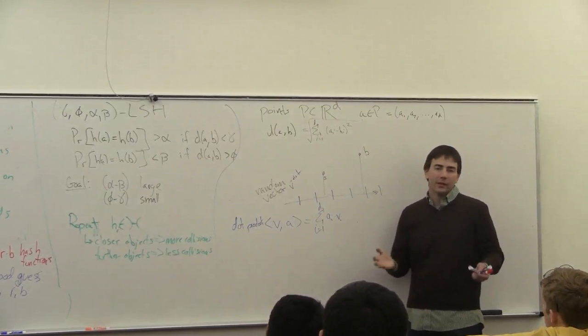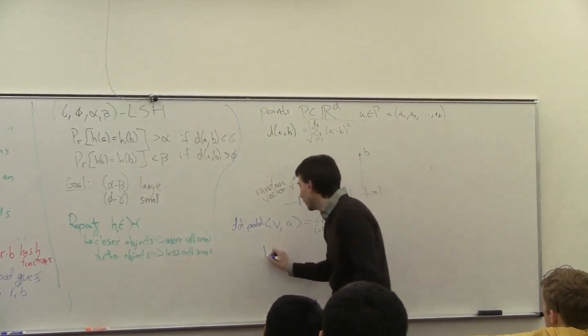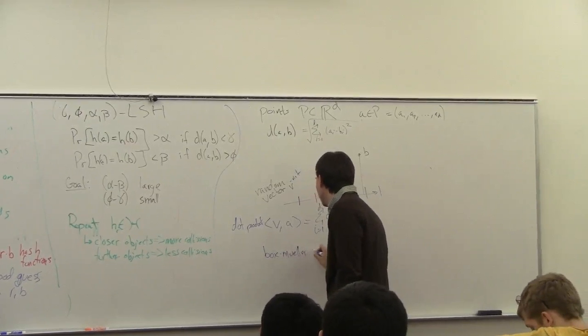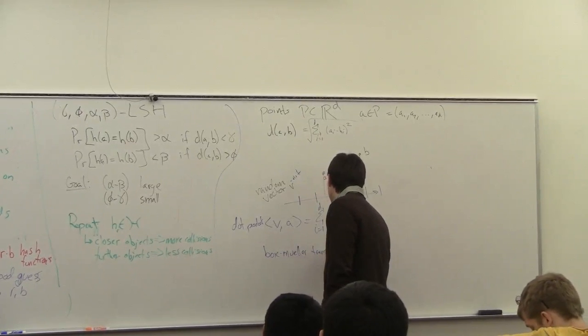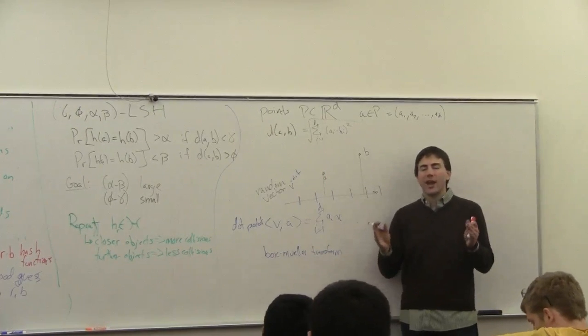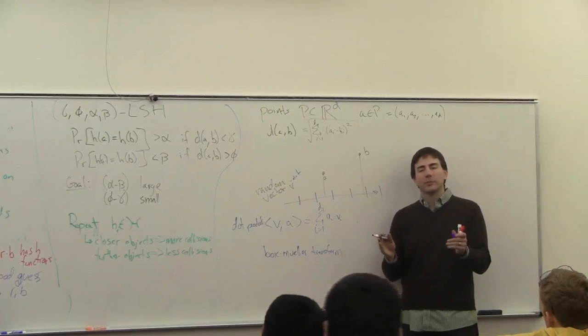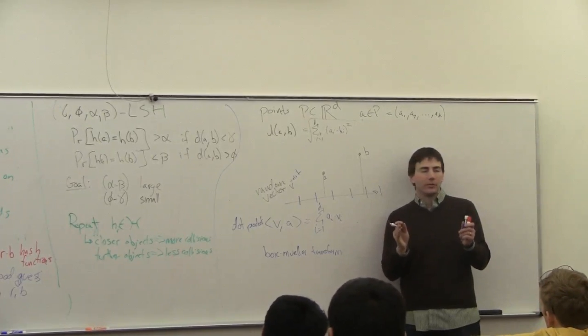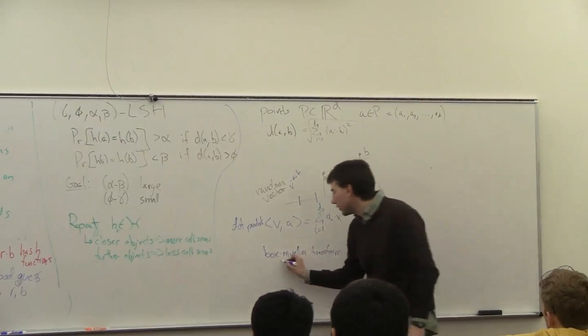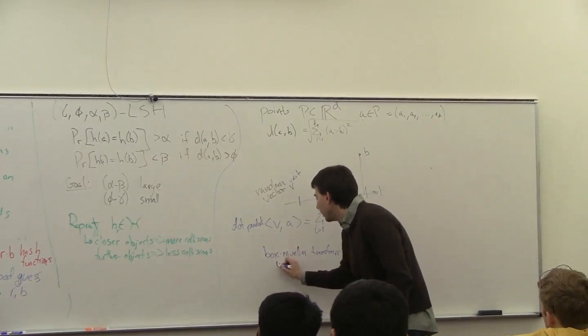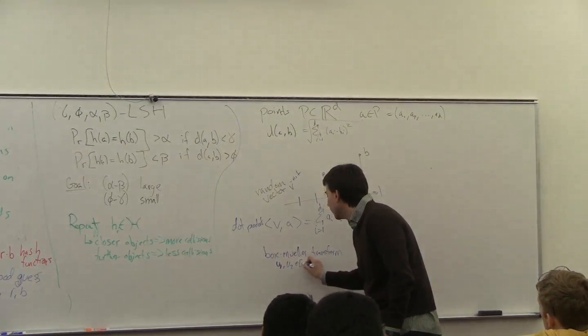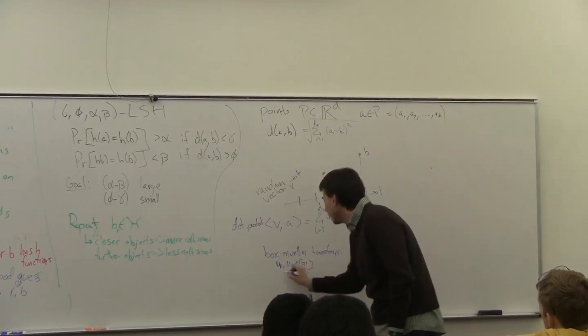So it turns out that this is something that's really easy to do. There's something called the Box-Muller transform. And what this does is it takes... So typically your computer has, or your programming language, has something to generate a random kind of fraction between 0 and 1.